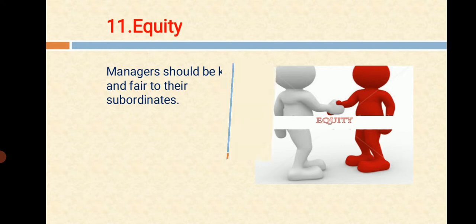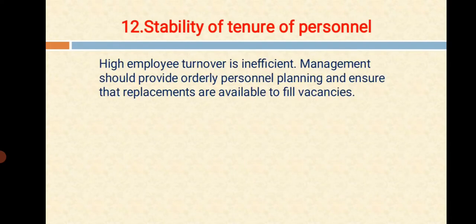And the next one is Stability of Tenure of Personnel. An employee delivers the best if they feel secure in their job. It's the duty of the management to offer job security to their employees. High employee turnover is inefficient. Management should provide orderly personal planning and ensure that replacements are available to fill vacancies.